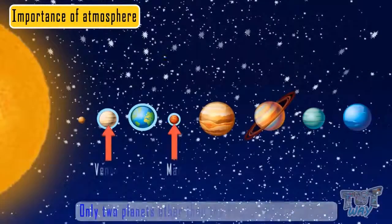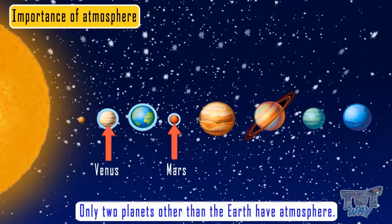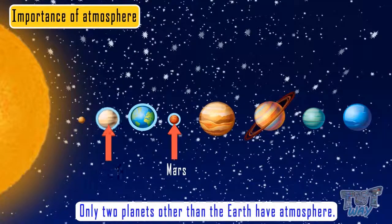In our solar system, only two planets other than Earth have atmospheres, and they are Venus and Mars.